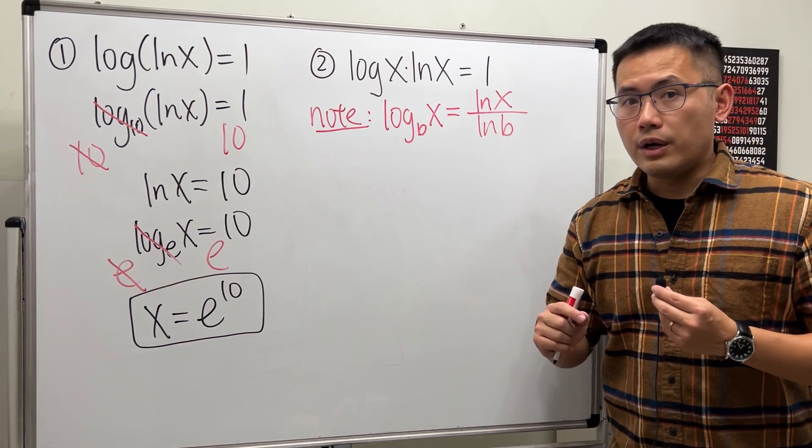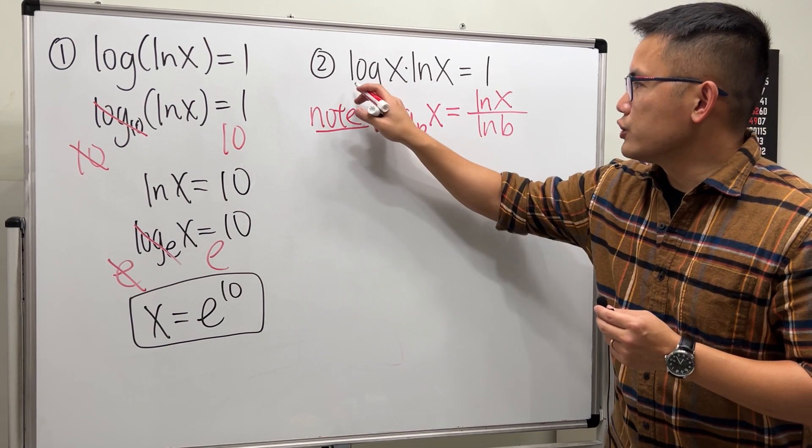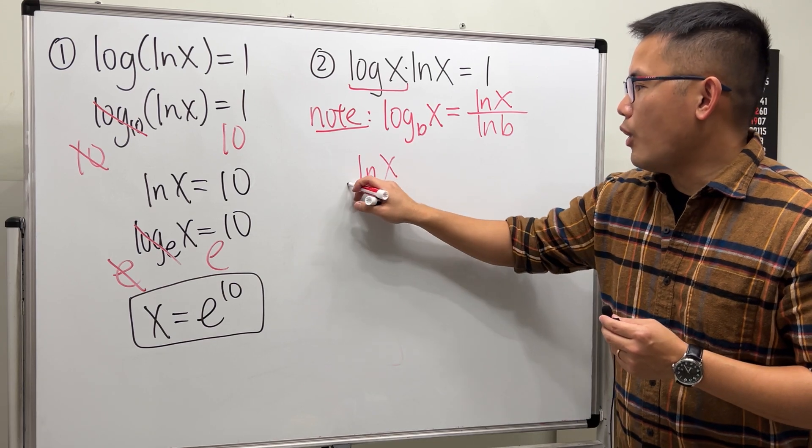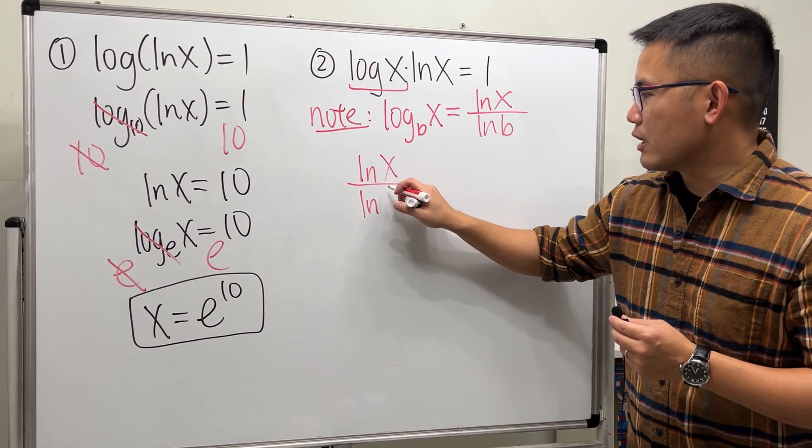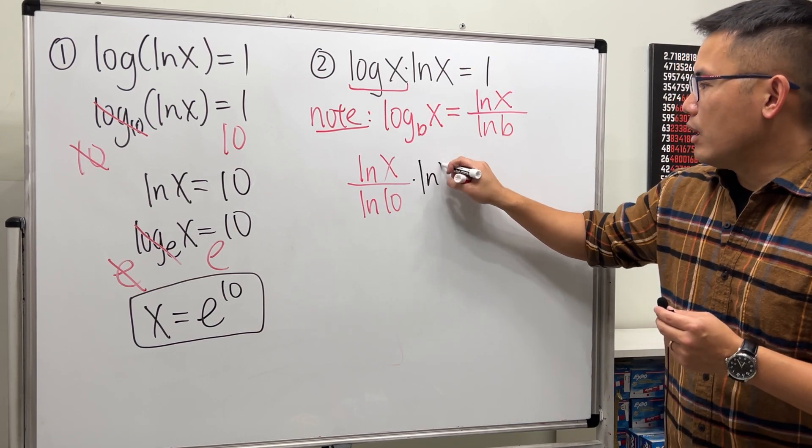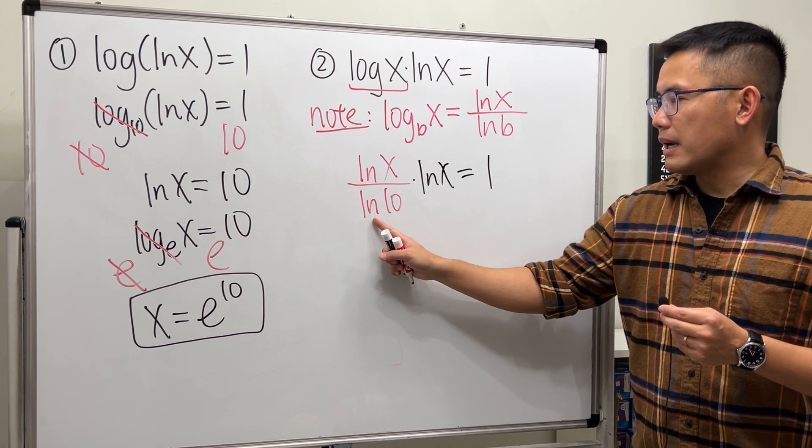So you can see we will just be working with ln for this right here. Again this is log base 10 so we will change this part as natural log of x over natural log of 10 and then we multiply that by ln of x and that's equal to 1.